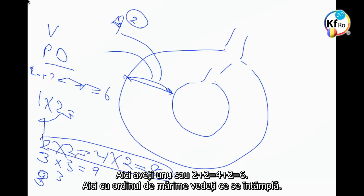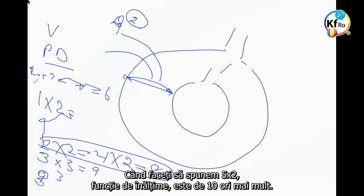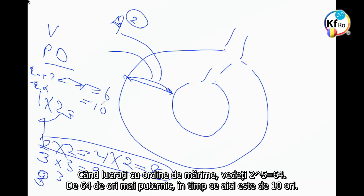Here, with order of magnitude, you see what happens. When you go, let's say five times two, depending on the height, it's ten times more. When you go by order of magnitude, you see, two to the power of five is 64 - 64 times stronger, where here is only ten.